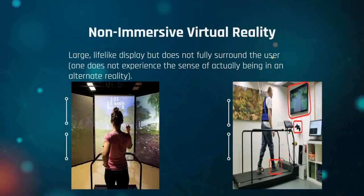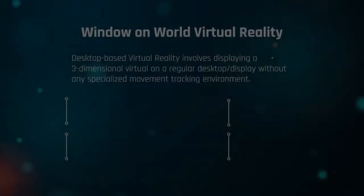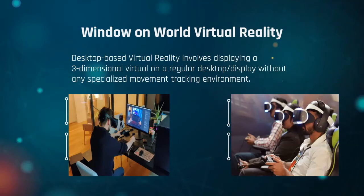Now for non-immersive virtual reality: this is commonly represented through large lifelike displays that do not fully surround the user — things like large projector screens or televisions that give you a smaller window into a virtual world. You can see this used on exercise machines that simulate taking you to different places, and it's also used for a wide variety of training applications. Desktop-based virtual reality involves displaying a three-dimensional virtual environment on a regular desktop display without any specialized movement tracking.